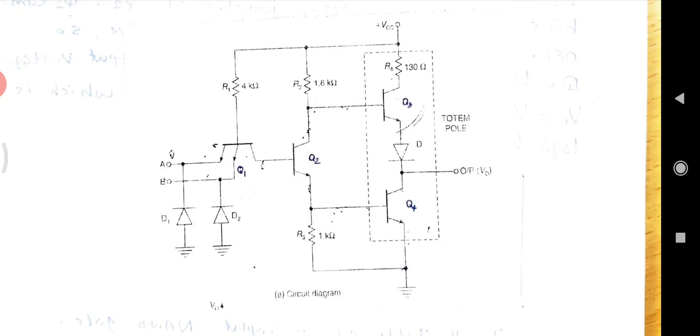transistor Q3 sits above transistor Q4. As shown in the figure, Q3 and Q4 are connected in totem pole fashion.